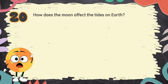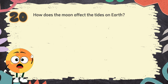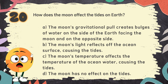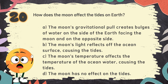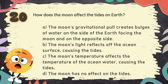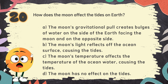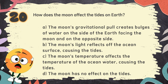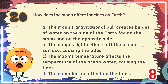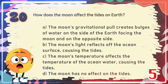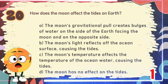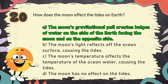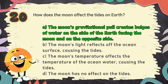Number 20. How does the moon affect the tides on Earth? The choices are A. The moon's gravitational pull creates bulges of water on the side of the Earth facing the moon and on the opposite side, B. The moon's light reflects off the ocean surface causing the tides, C. The moon's temperature affects the temperature of the ocean water causing the tides, D. The moon has no effect on the tides. The correct answer is A. The moon's gravitational pull creates bulges of water on the side of the Earth facing the moon and on the opposite side.